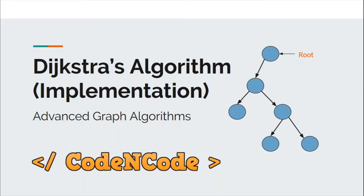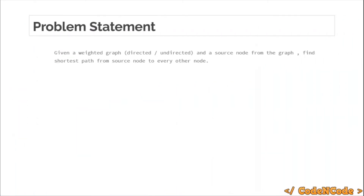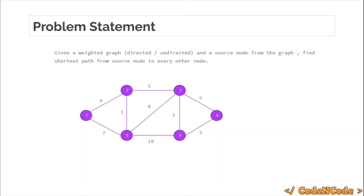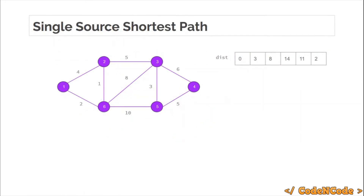The problem statement was clear from the previous lecture: we are given a weighted graph where each edge has a certain weight, and we are given a source vertex. We have to find the minimum distance — the shortest distance — from the source vertex to every other vertex. For the example problem, assuming node 1 is the source vertex, node 1 is at distance 0 from itself, at distance 3 from node 2. From node 1 you can go to node 6 and then to node 2, and this is the final result we want.